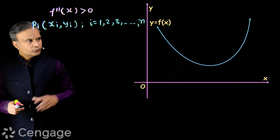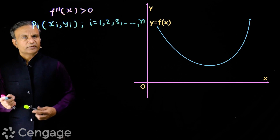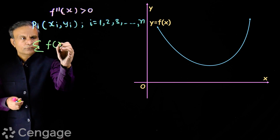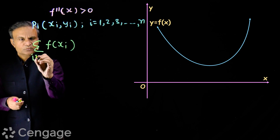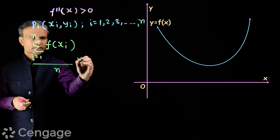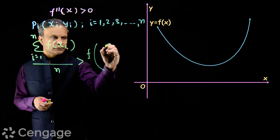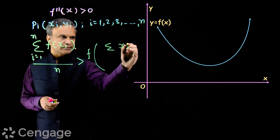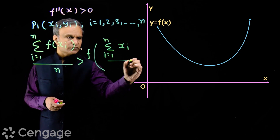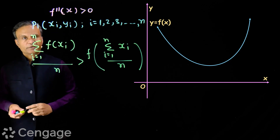Now for this curve, when the curve is concave upward, we have the inequality: sigma of f(xi) where i is moving from 1 to n, all over n, is greater than f of sigma of xi where i is moving from 1 to n, divided by n.